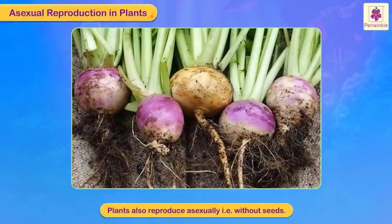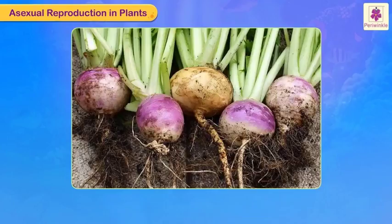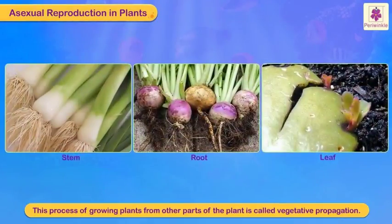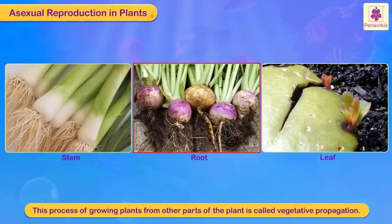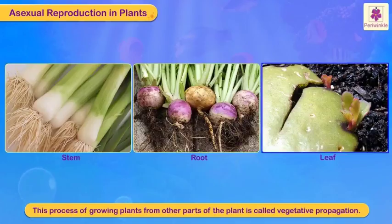Plants also reproduce asexually, that is, without seeds. This process of growing plants from other parts of the plant like stem, root, and leaves is called vegetative propagation.